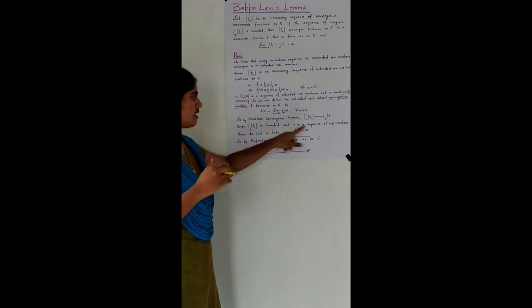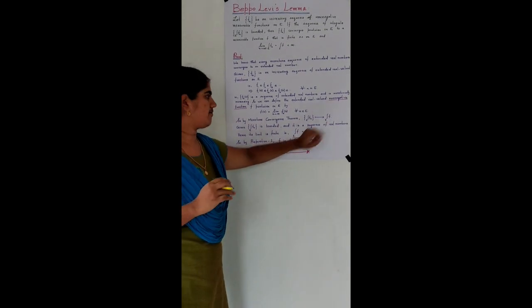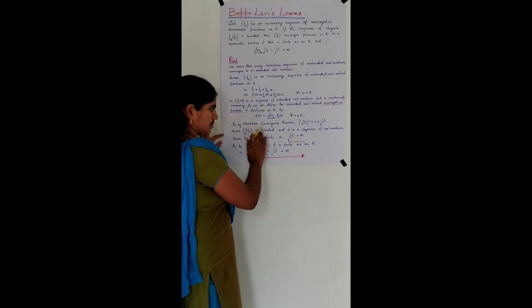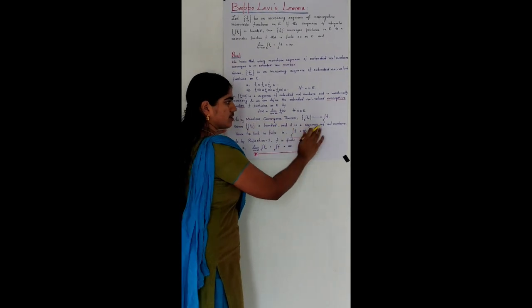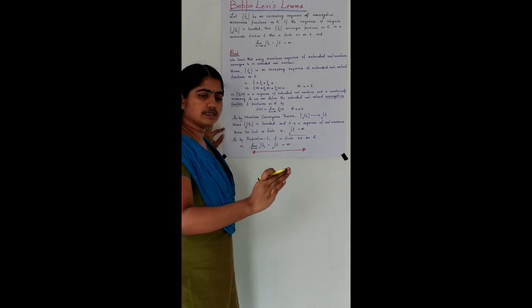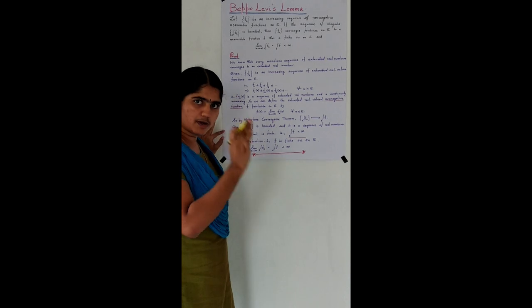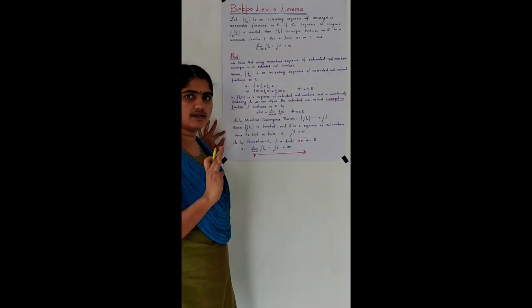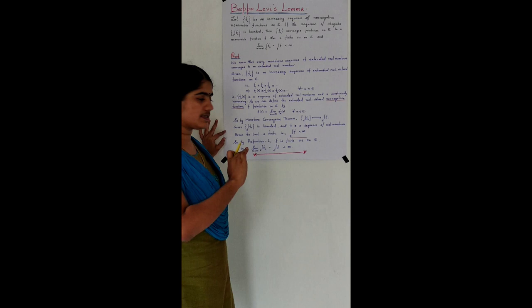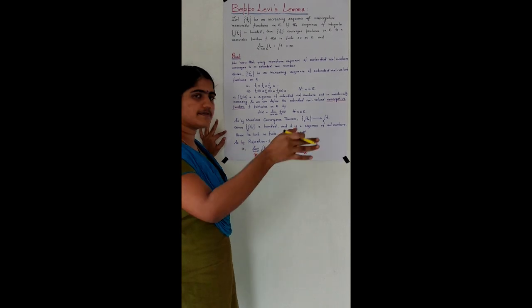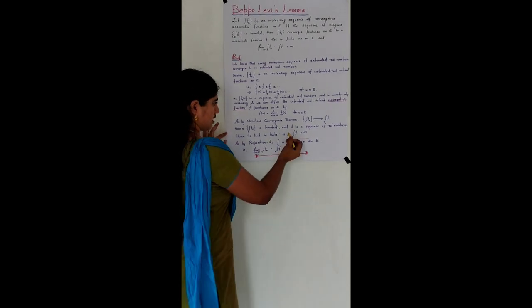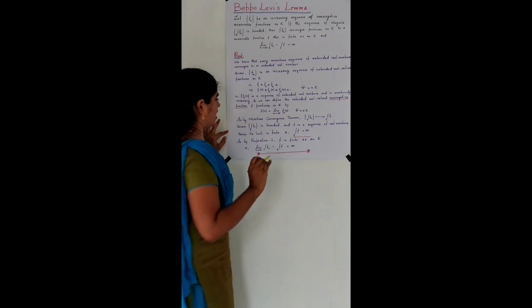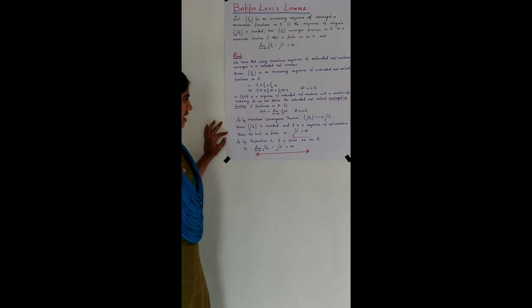The limit of the sequence of integrals is the integral over E of F. Since the sequence itself is bounded, the limit is also finite — it cannot go to infinity because the sequence is bounded. So we obtain that the integral over E of F is finite.